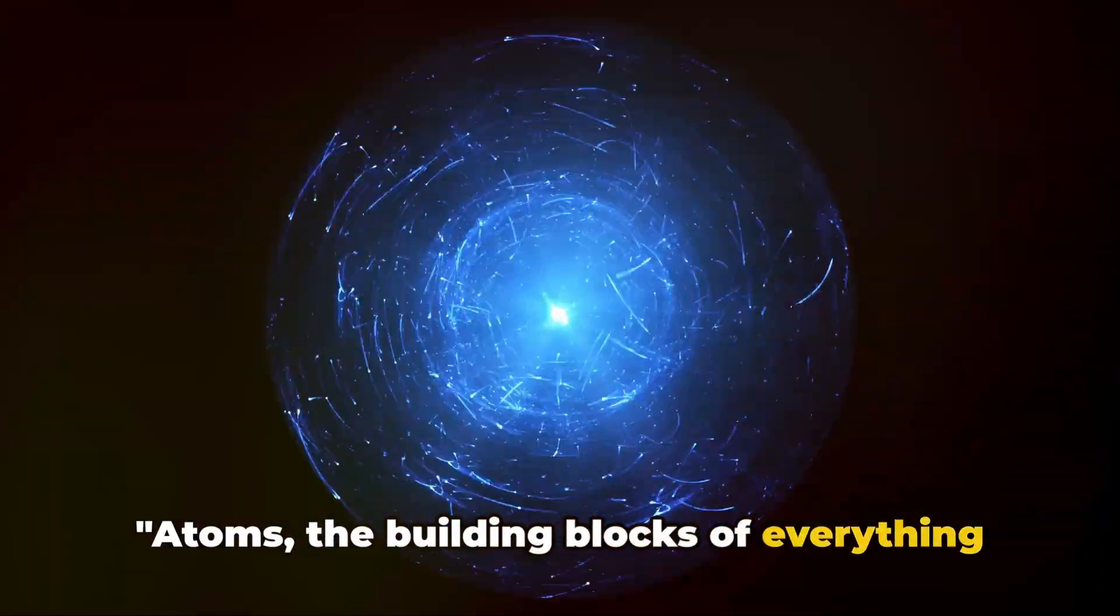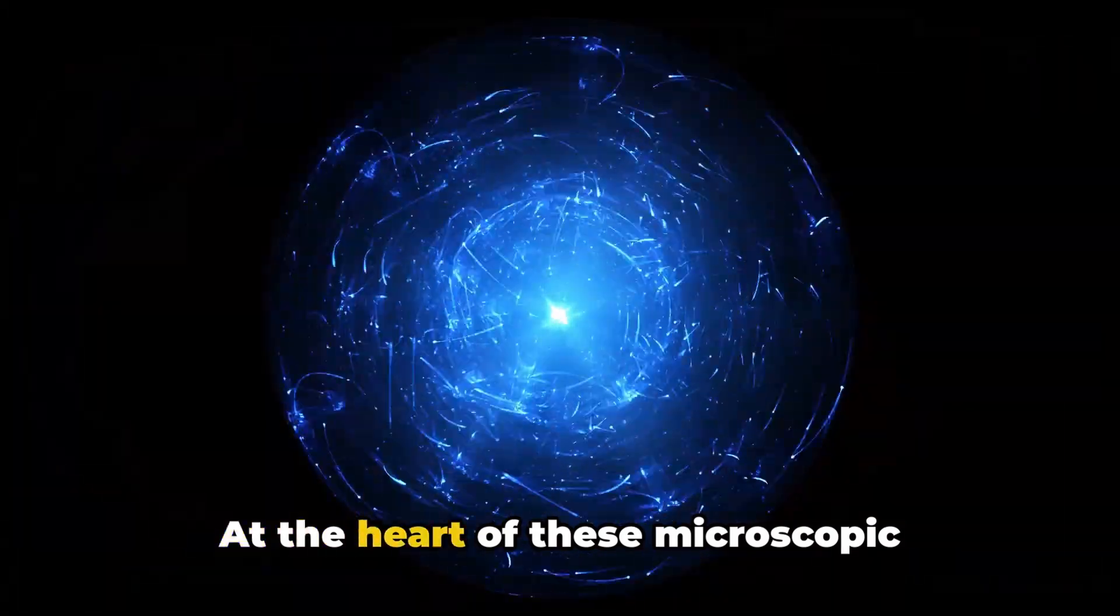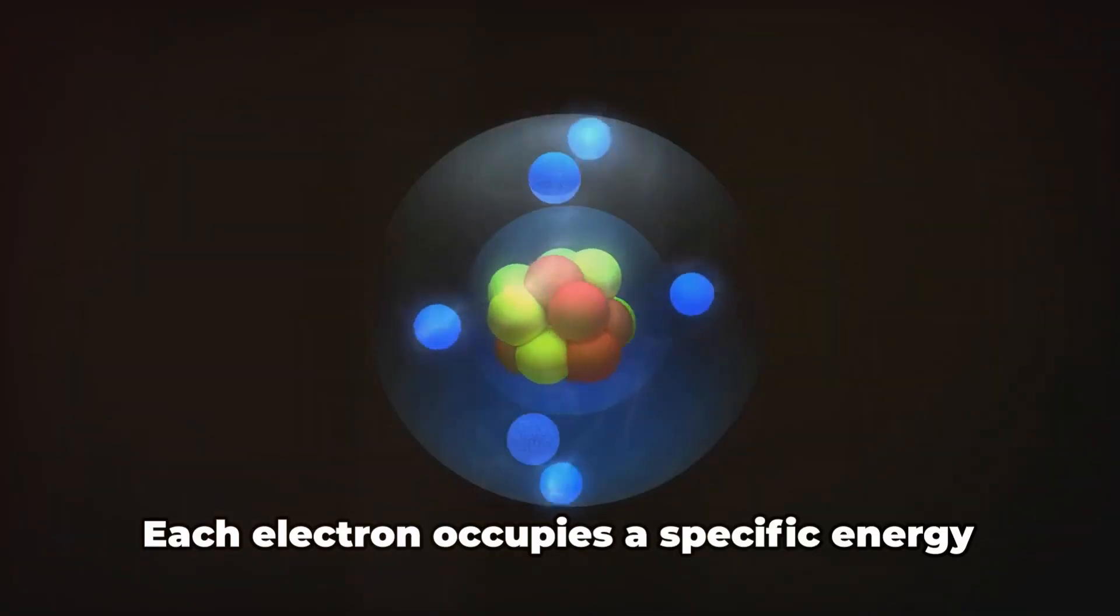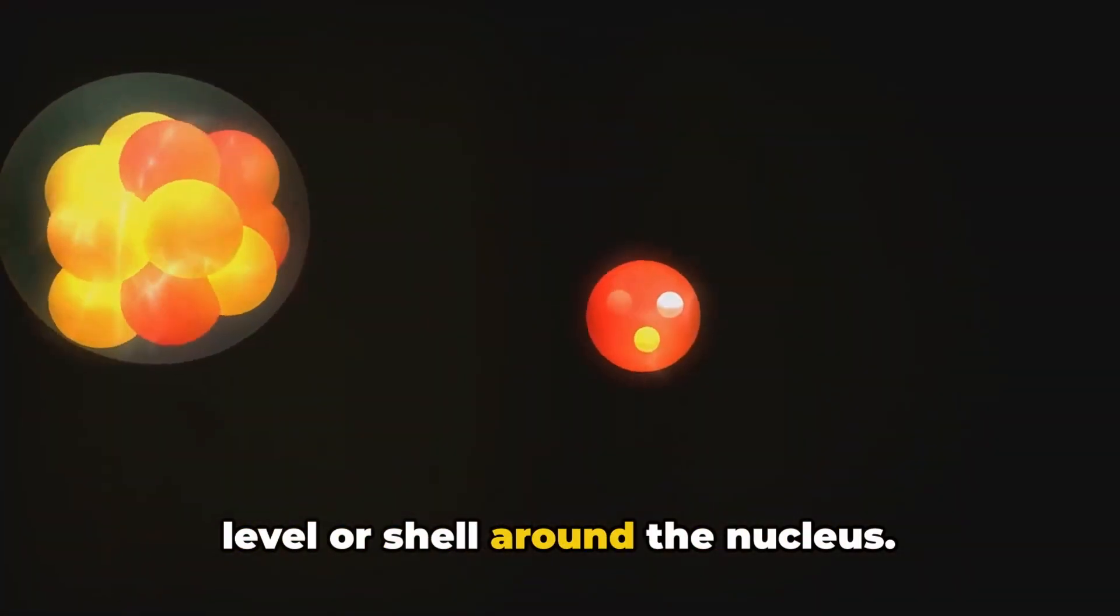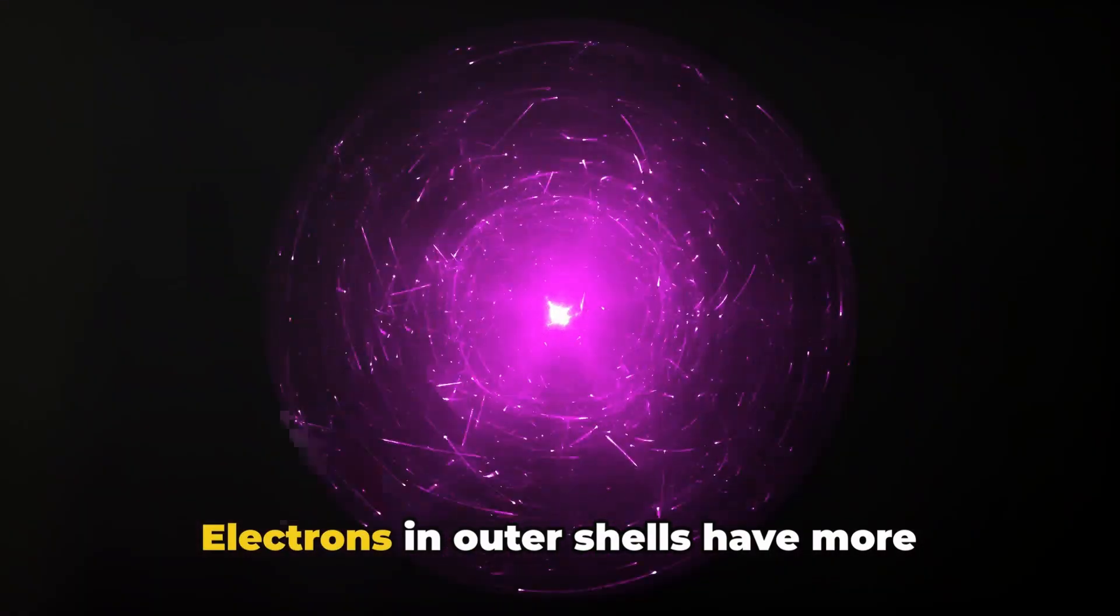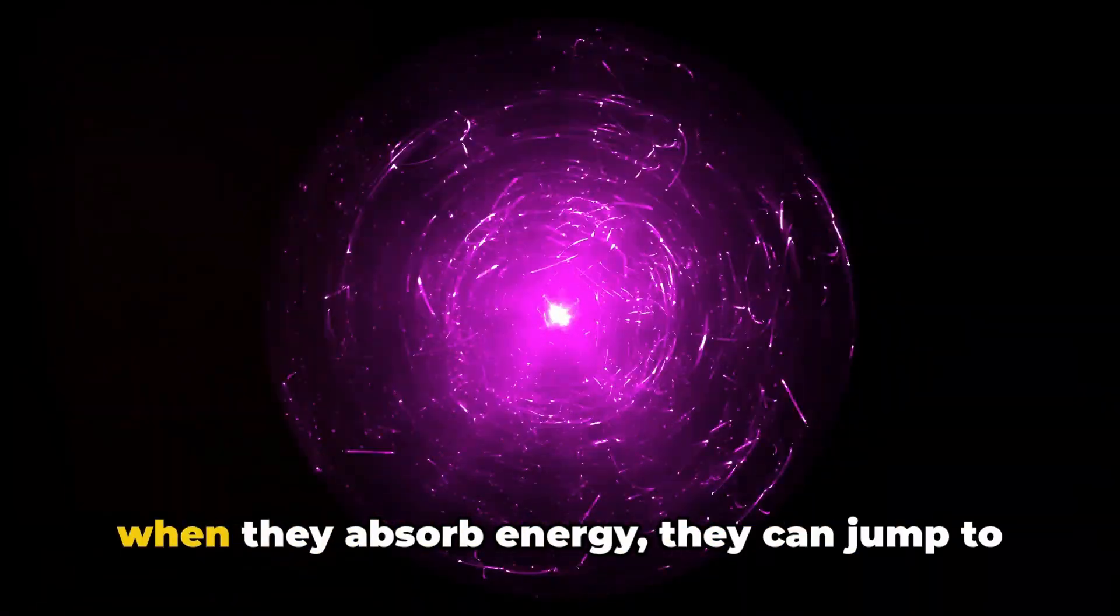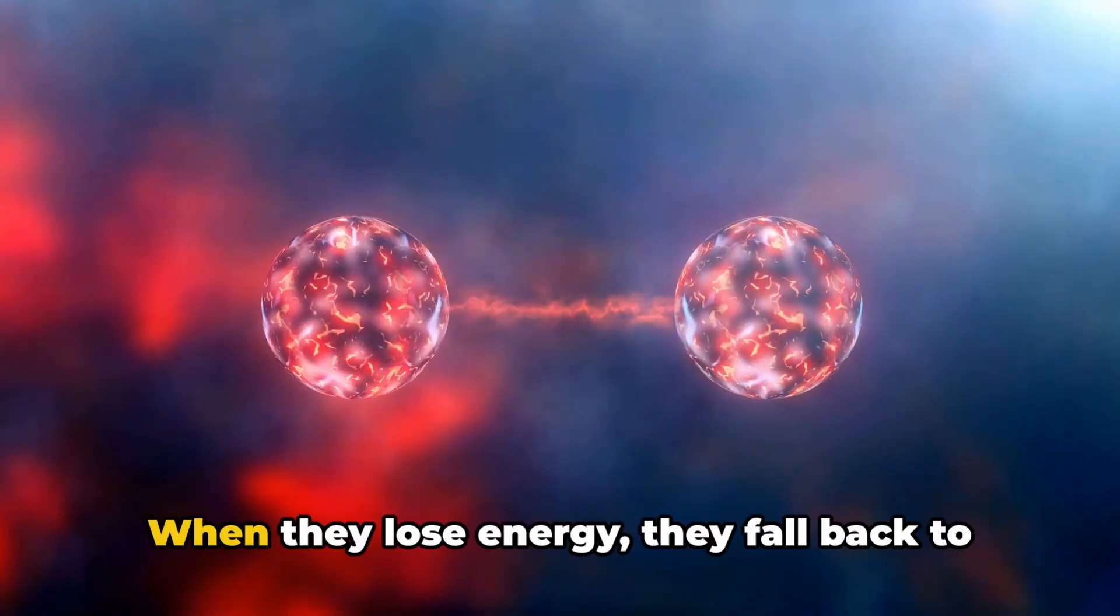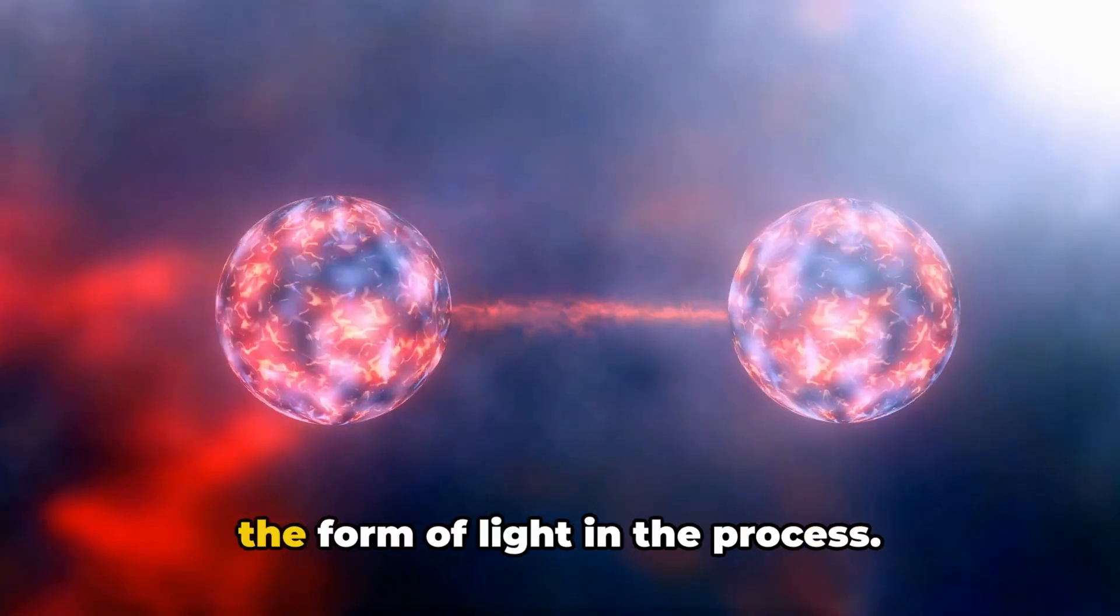Atoms, the building blocks of everything we see, hide a quantum secret in their core. At the heart of these microscopic entities are protons and neutrons orbited by electrons. Each electron occupies a specific energy level or shell around the nucleus. Electrons in outer shells have more energy than those in inner shells. When they absorb energy they can jump to higher energy levels. When they lose energy they fall back to their original level, emitting energy in the form of light in the process.